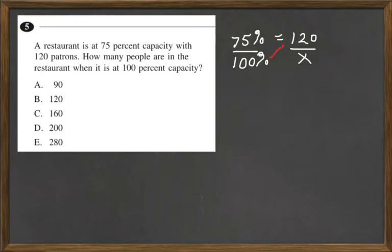So if I have 100 times 120, we have 1, 2, 0, and tack on two more 0s to that. And that is equal to 75x.